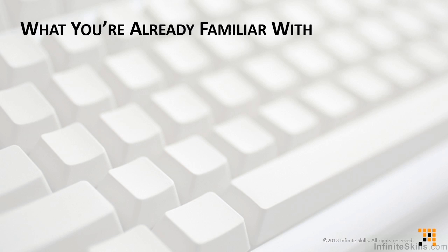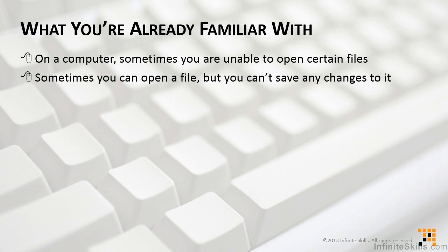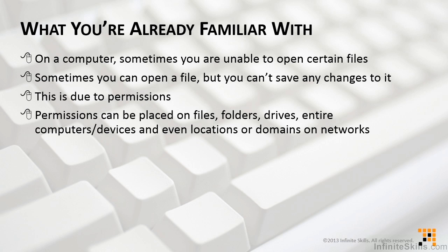I always like to focus on what you're already familiar with, because you're comfortable with that, and then you have a frame of reference for the new things you're about to learn. What you already know is that on a computer, sometimes you are unable to open certain files, and sometimes you can open a file but you can't save any changes to it. Everybody's experienced that — this is due to permissions. Permissions can be placed on files, folders, drives, entire computers or devices like scanners and printers, and even entire locations or domains on networks. A lot of different levels can have security.